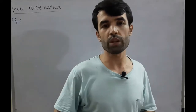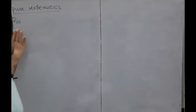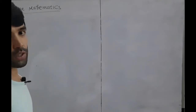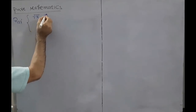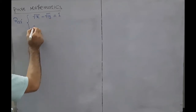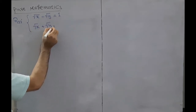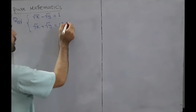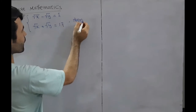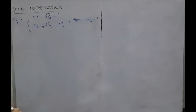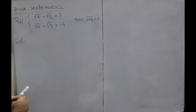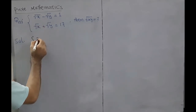Hello dear students, welcome to the Pure Mathematics channel. This is question 122. In this class we want to solve a system of equations: square root of x minus square root of y equals 1, and square root of x plus square root of y equals 17. Then square root of x multiplied by square root of y equals question mark. We want to solve this question.